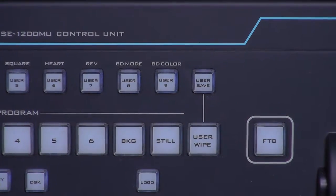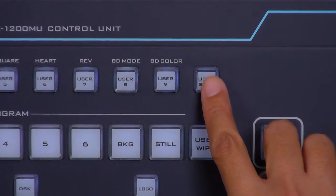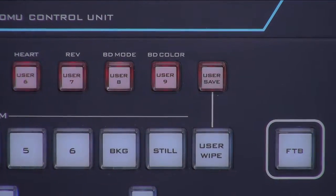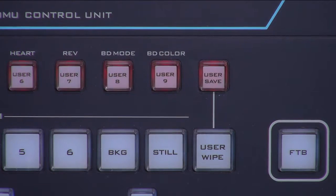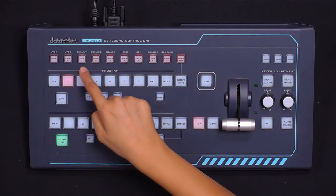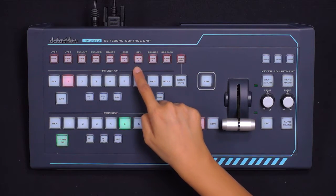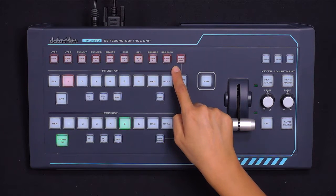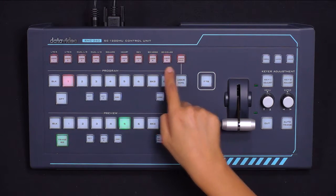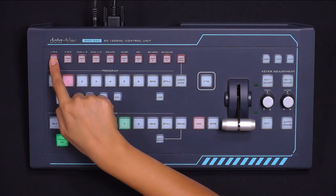To assign a user preset, simply press User Save on the top right of your RMC260 Control Panel or PC app, then select any of the 9 user buttons along the top of the control panel to save all your settings.